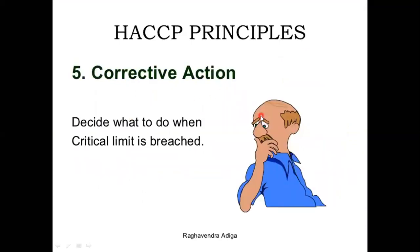The fifth principle is corrective action. If through the monitoring system you have identified that a particular hazard is not being properly controlled — for example, proper time-temperature is not maintained, or the maximum residue level of a chemical hazard is not properly maintained — in that case we have to take a decision: either transfer that product to the next process or discard it. That action is taken under the corrective action principle.